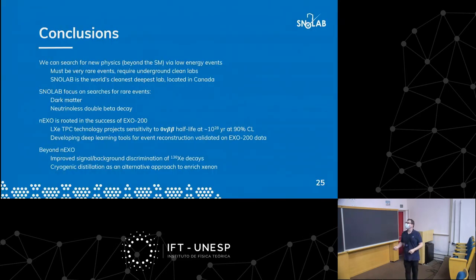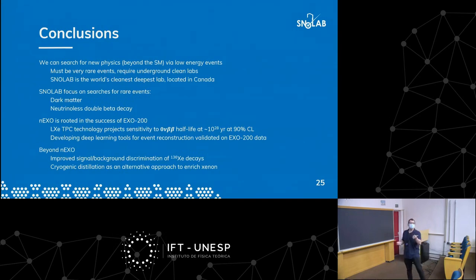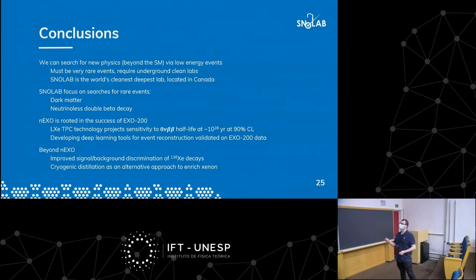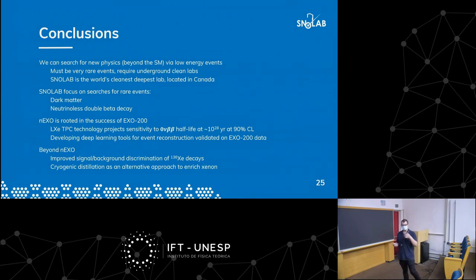To conclude: we can search for new physics beyond the standard model via low energy rare events, and SNO Lab is the ideal place for this. The lab focuses on dark matter and neutrinoless double beta decay. nEXO is a neutrinoless double beta decay search project based on the successful EXO-200 experiment, projecting sensitivity down to 10²⁸ years half-life. We're developing deep learning tools for EXO-200 that will be used in nEXO, and beyond nEXO we're working on improved signal-background discrimination and xenon enrichment production at the scale of tens of tonnes.